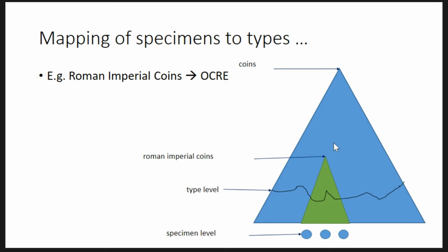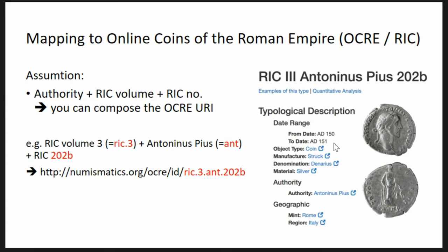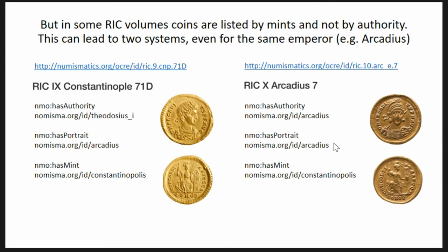When David first told me we need to link to RIC, he said it's very simple: you need the authority, you need to know which RIC volume it is — because there are different volumes — and then you need the number, and you can link to the typology. Unfortunately, these typologies are made by humans, and they tend to do things very differently in different situations. So this is the easy case: you have the authority, you get the number, and you point directly to the typology defined in the RIC volumes. But then in a certain volume they switch and no longer use the authority — instead they use the place where the coin was minted.